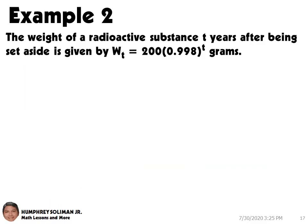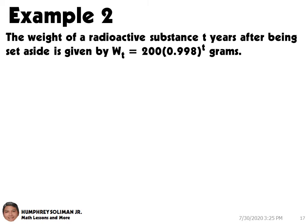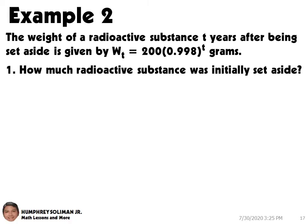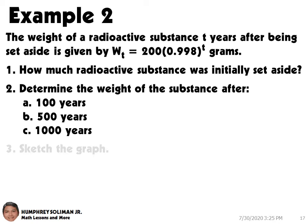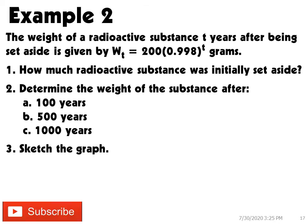Let's try to answer an example about exponential decay. The weight of a radioactive substance in T number of years after being set aside is given by the equation Wt equals 200 times 0.998 raised to T. Number 1: how much radioactive substance was initially set aside? Number 2: determine the weight of the substance after 100 years, 500 years, and 1000 years. Number 3: sketch the graph of the exponential decay.